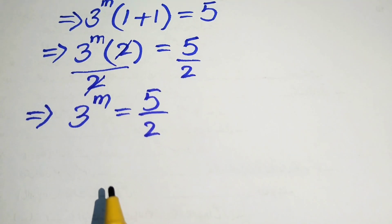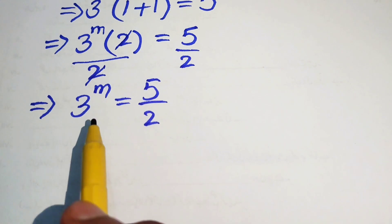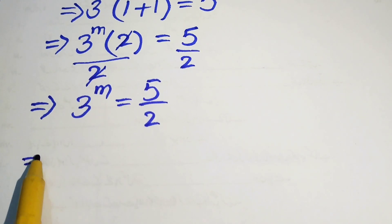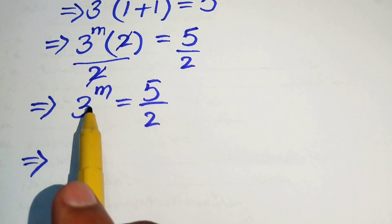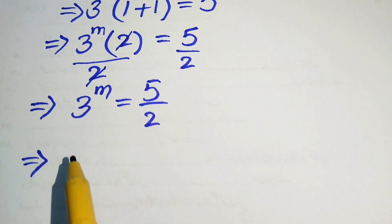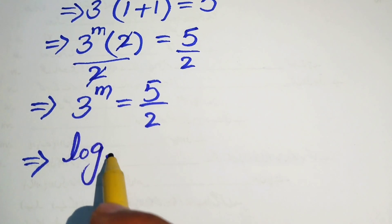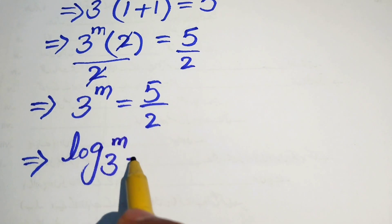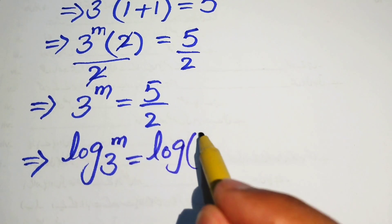Since we are solving for m and the variable appears in the exponent, we need to take the log of both sides. We apply log to both sides and write: log of 3 to the power of m equals log of 5 over 2.